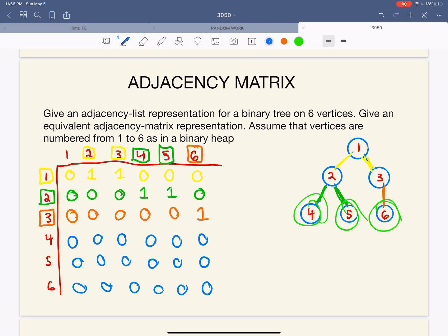That's it. That's how you create an adjacency matrix from a binary tree. If you have any questions, leave them in the comments below and I'll try to help. Thanks.